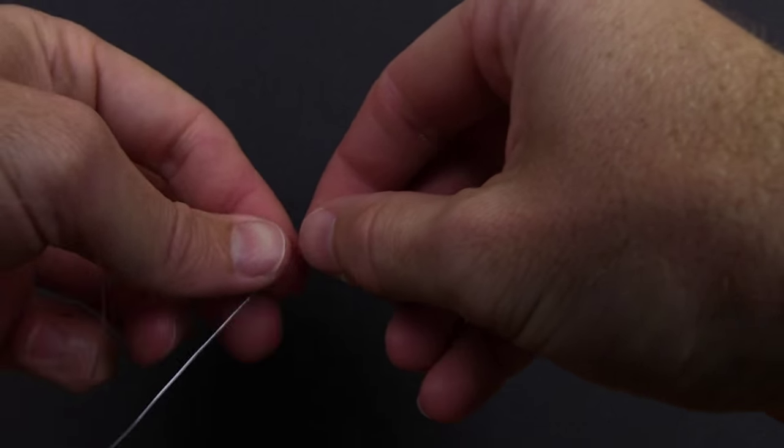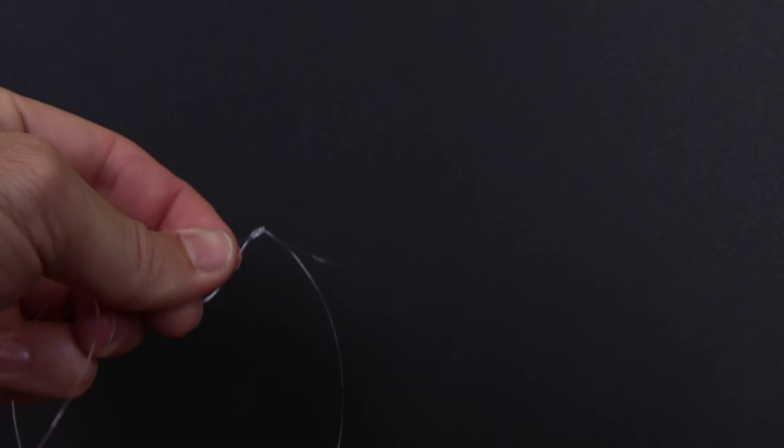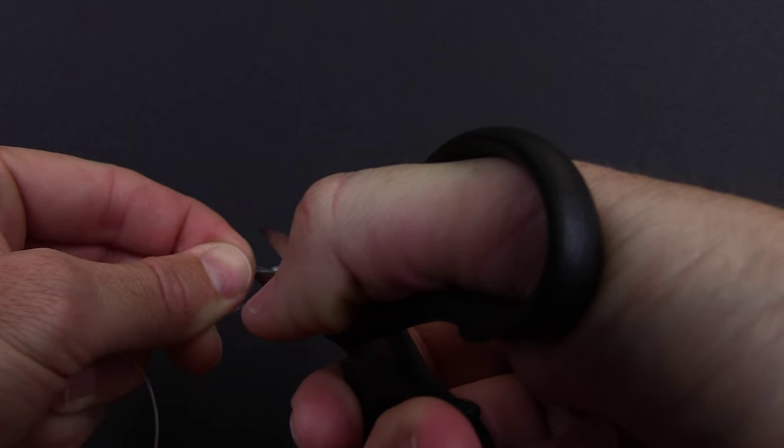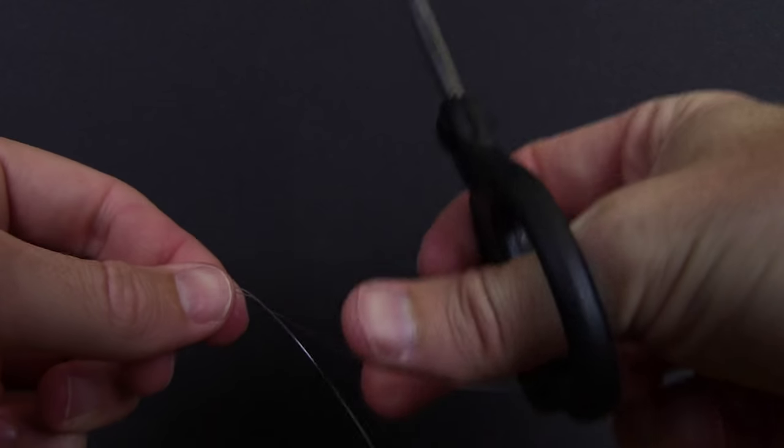You'll see that knot really just cinch down and form to a nice clear and crisp little knot. So there it is, there's the Albright special. You can see it's fairly easy to tie and it is really small, which is why it's so popular.